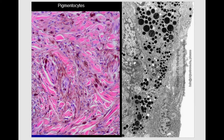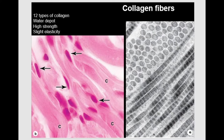Now let's look at the structure of the extracellular matrix — particularly the fibers. The extracellular matrix is composed of ground substance and fiber structures. Fibers in connective tissue include collagen fibers, elastic fibers, and reticular fibers. Collagen fibers are the most numerous fibers in the connective tissue. Under the light microscope they appear as pink, elongated structures, and can be stained with hematoxylin and eosin. Under the electron microscope, collagen fiber bundles show striation, which is a key distinguishing feature.